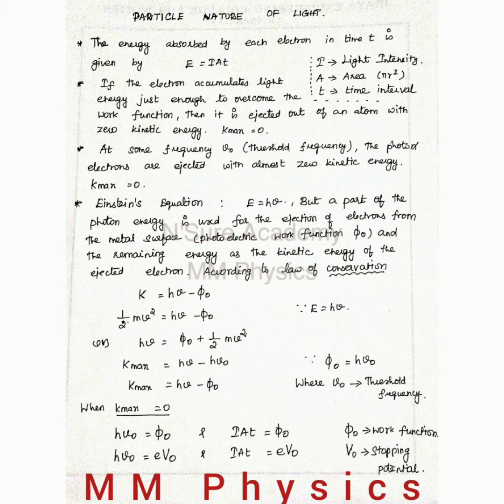In another case, at some frequency, that is at threshold frequency, the photoelectrons are ejected with almost zero kinetic energy, then also Kmax is equivalent to zero. In both cases, the kinetic energy of the electrons which come out from the metal surface becomes zero, so it will not get accelerated.